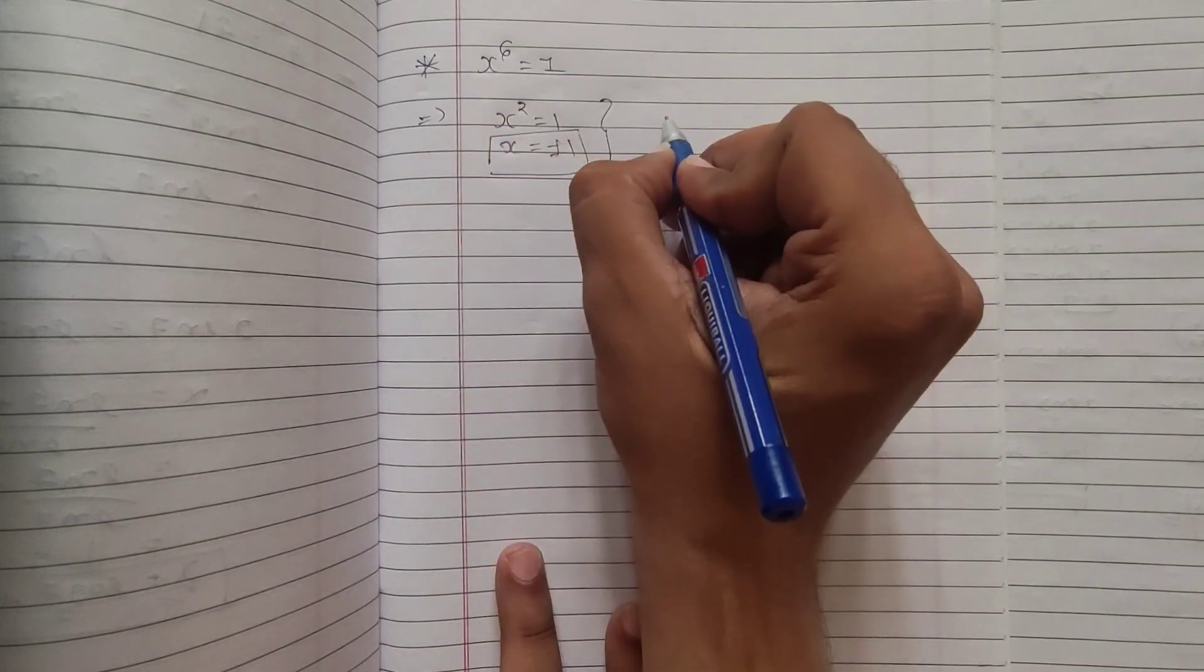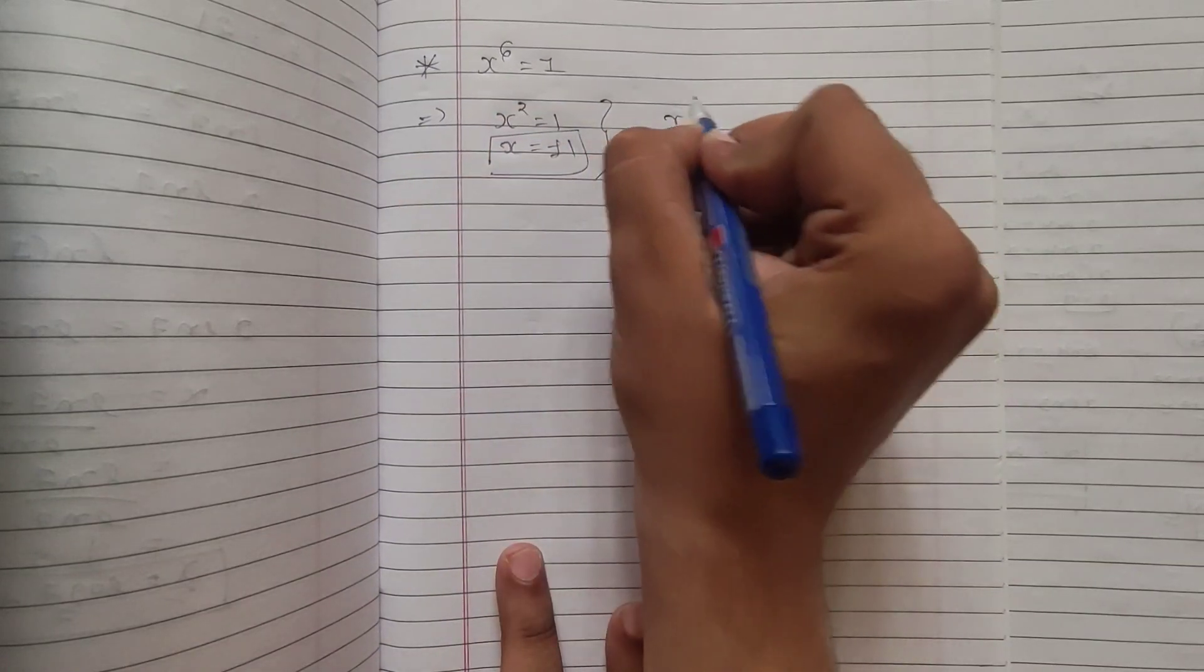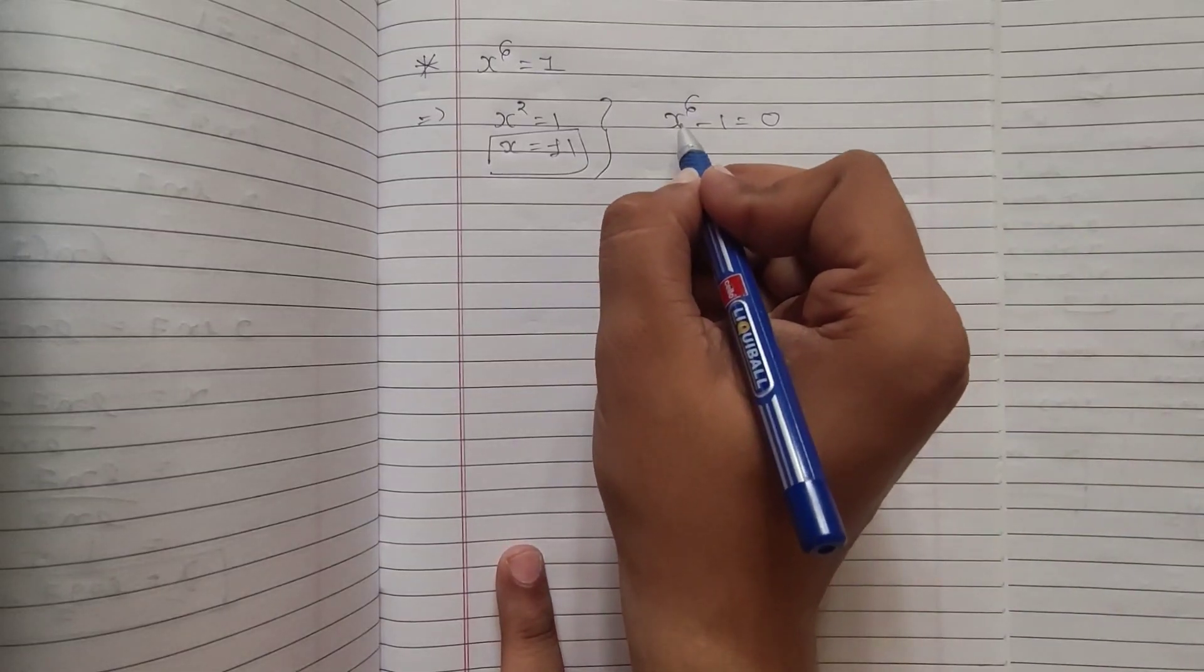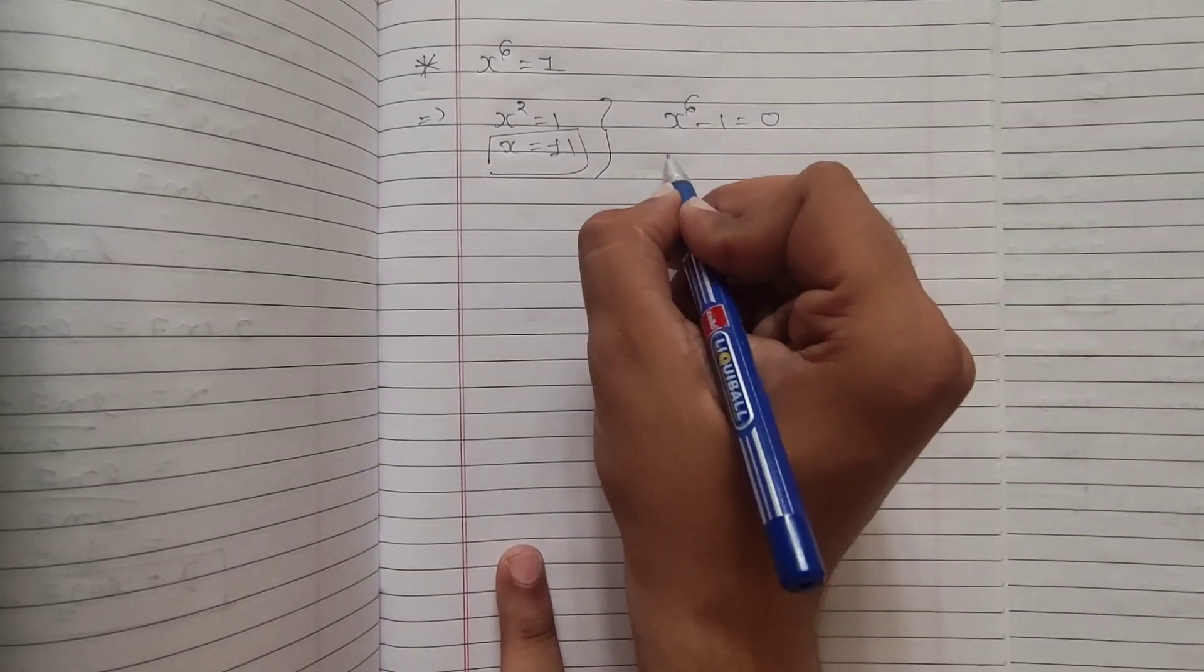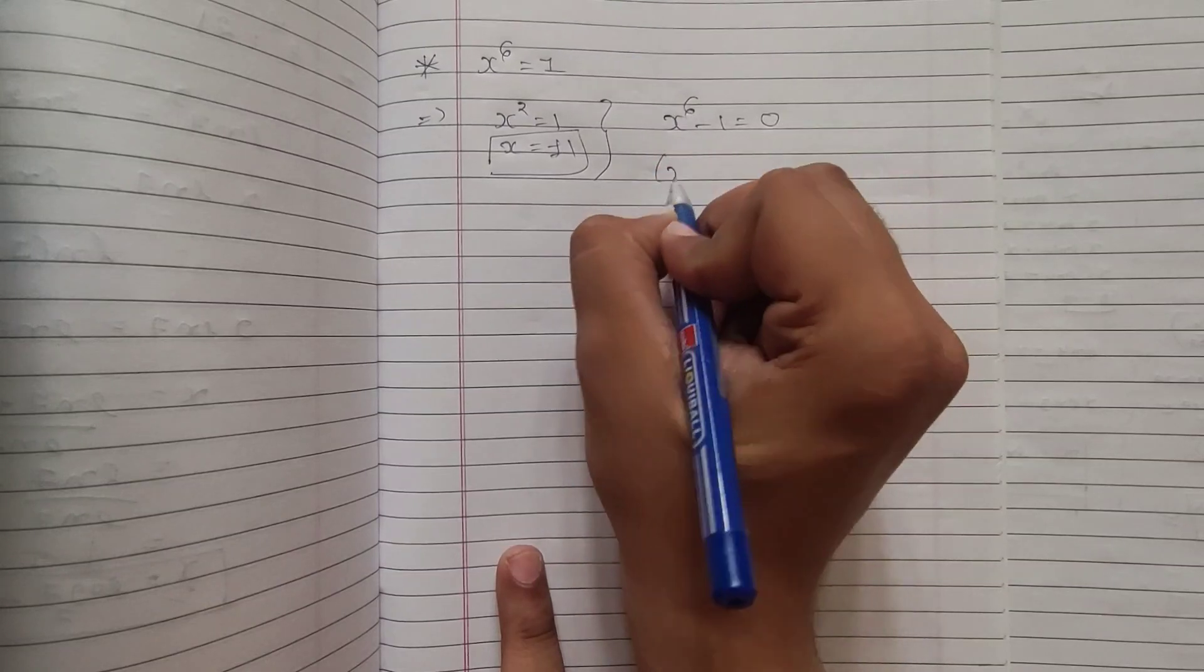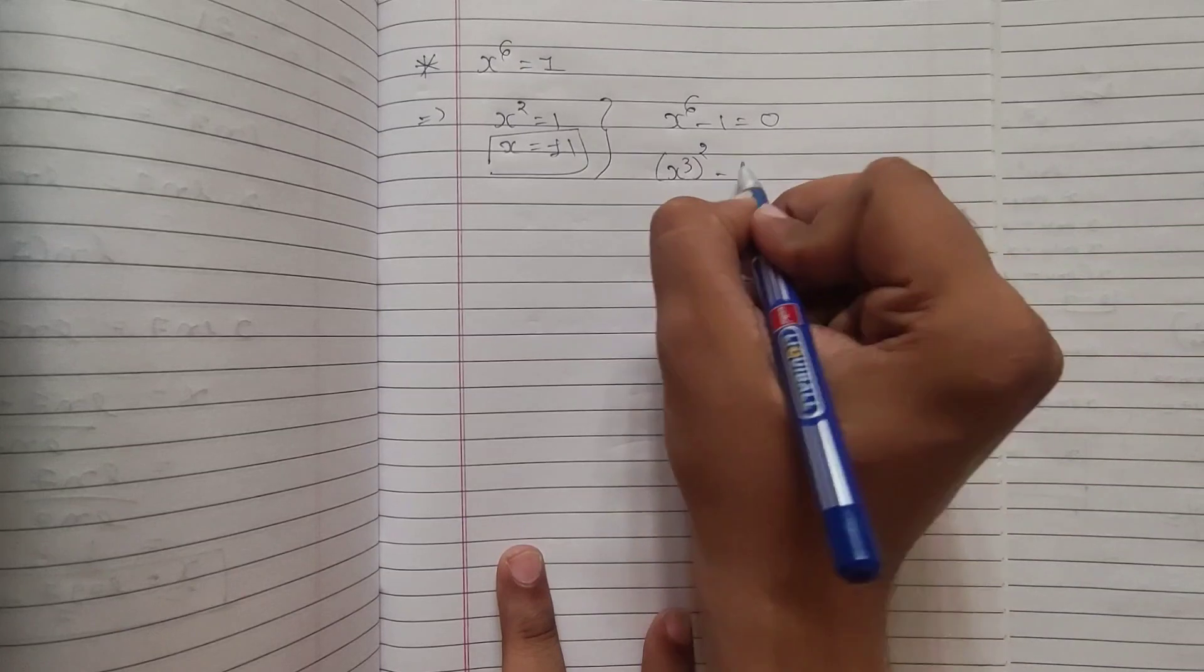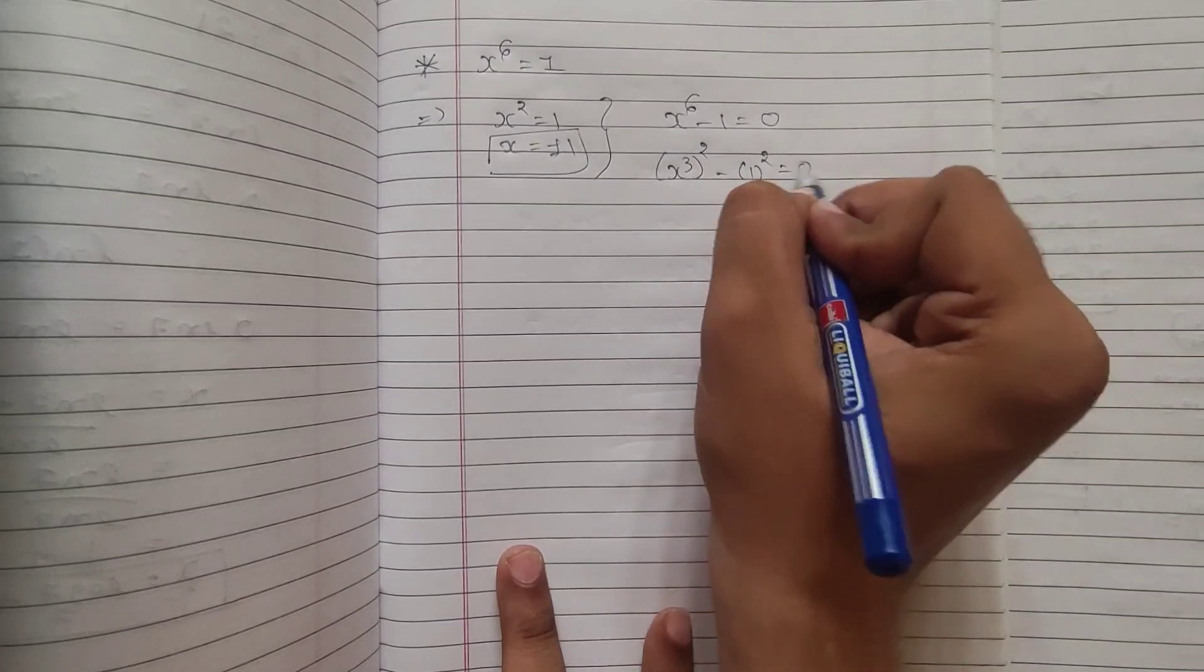First of all, I can write x to the 6 equal to 1 as x to the 6 minus 1 equal to 0. Agree, right. And now I can do a little adjustment. How? I can write x to the 6 as x cube whole squared. Agree? Minus 1 squared equal to 0.